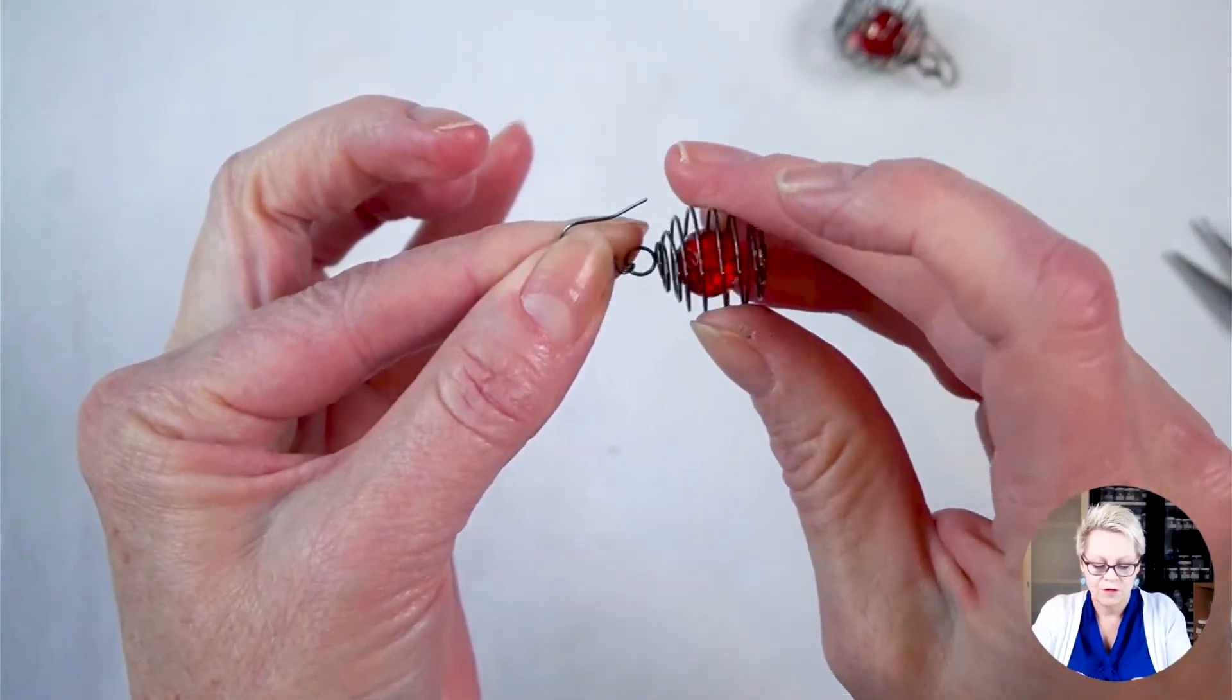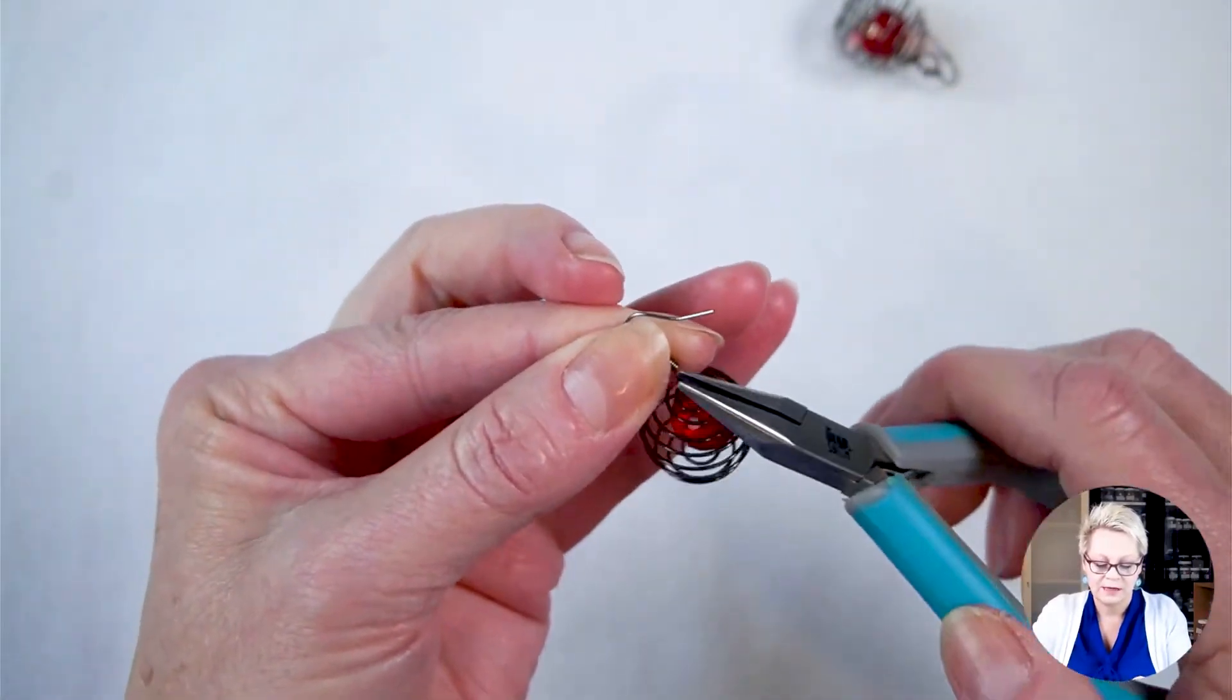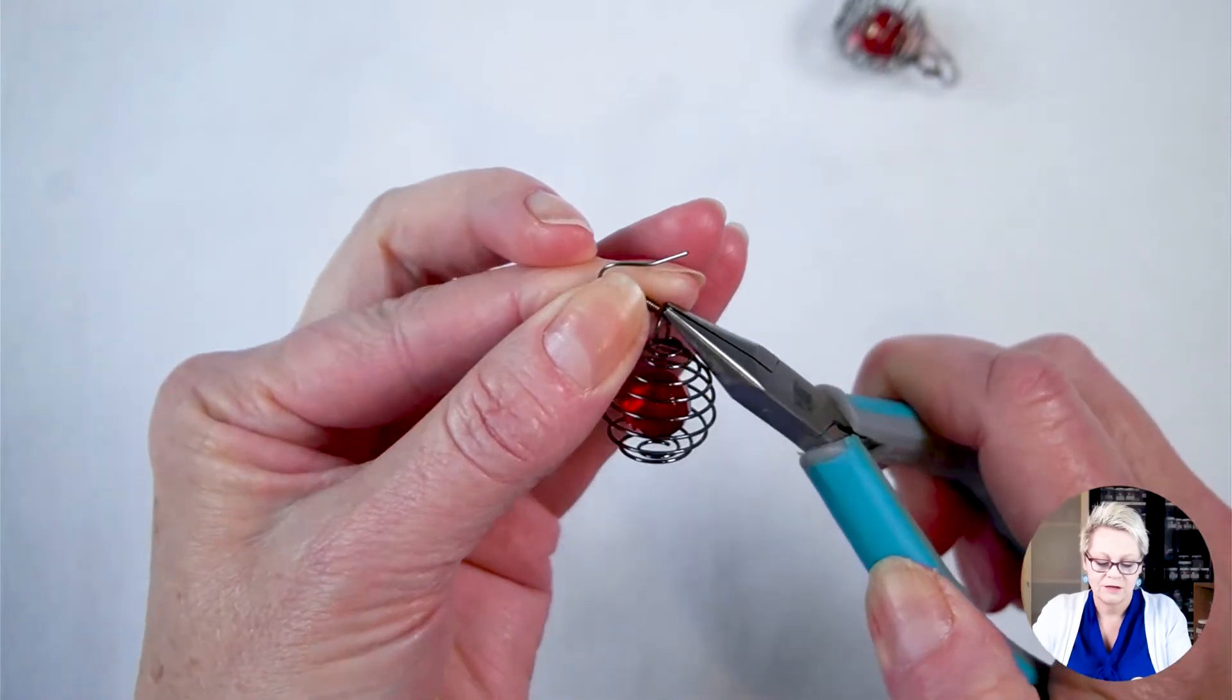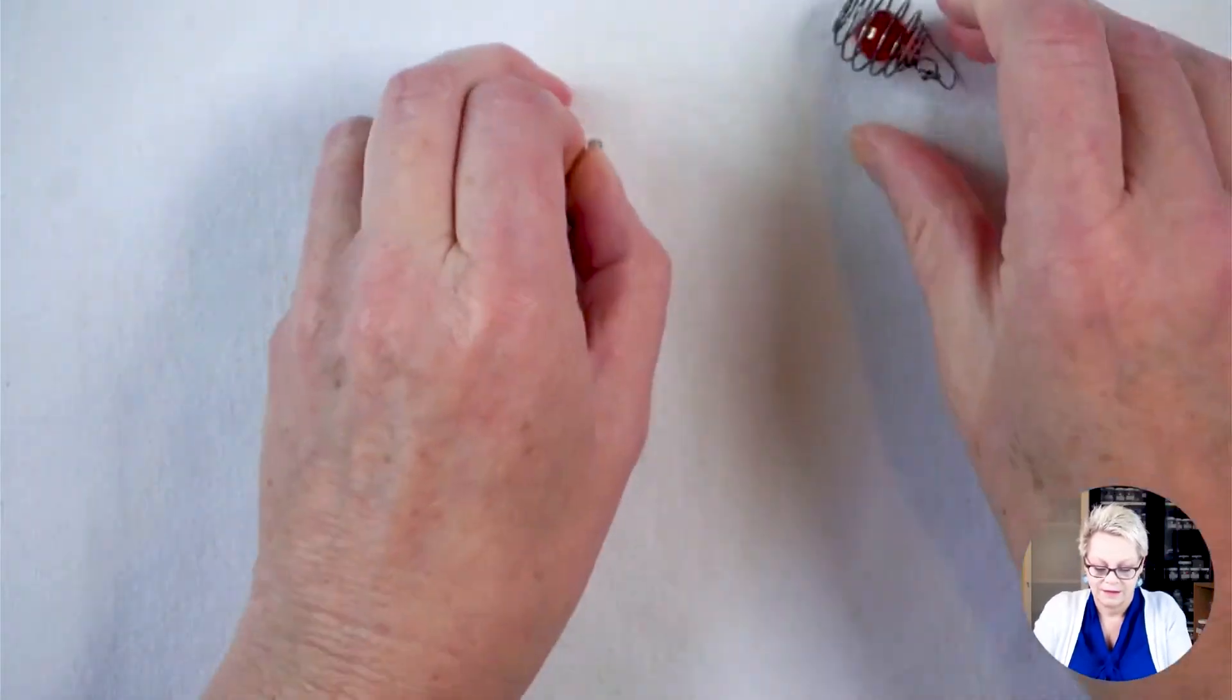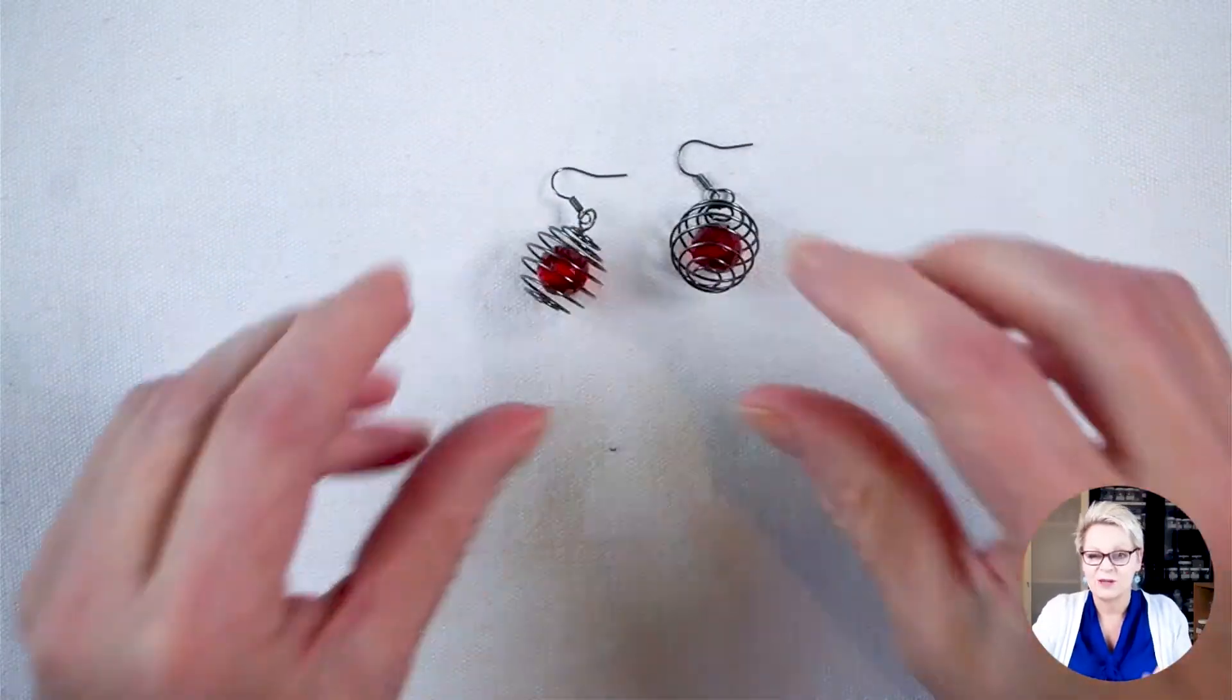Popping on the loop of the spring cage bead and closing it. There you go. That was super fast!